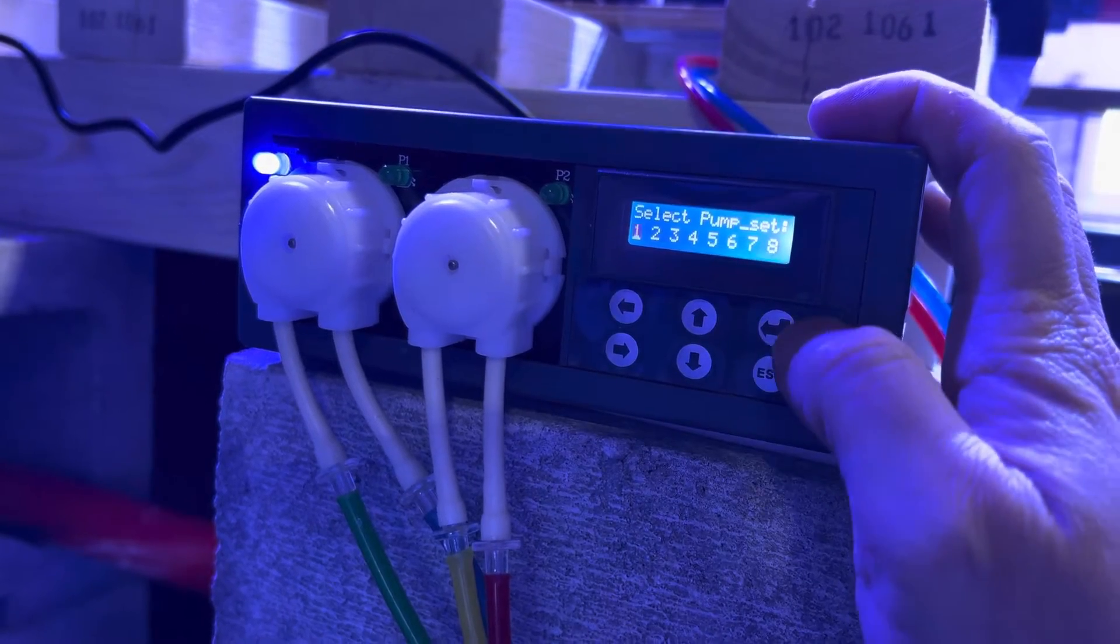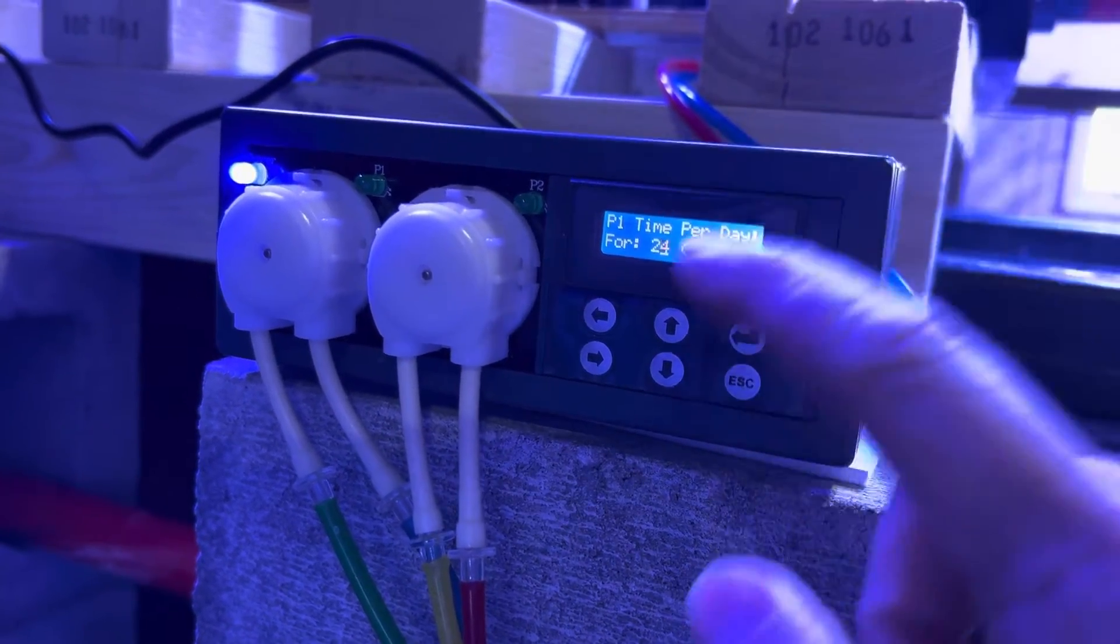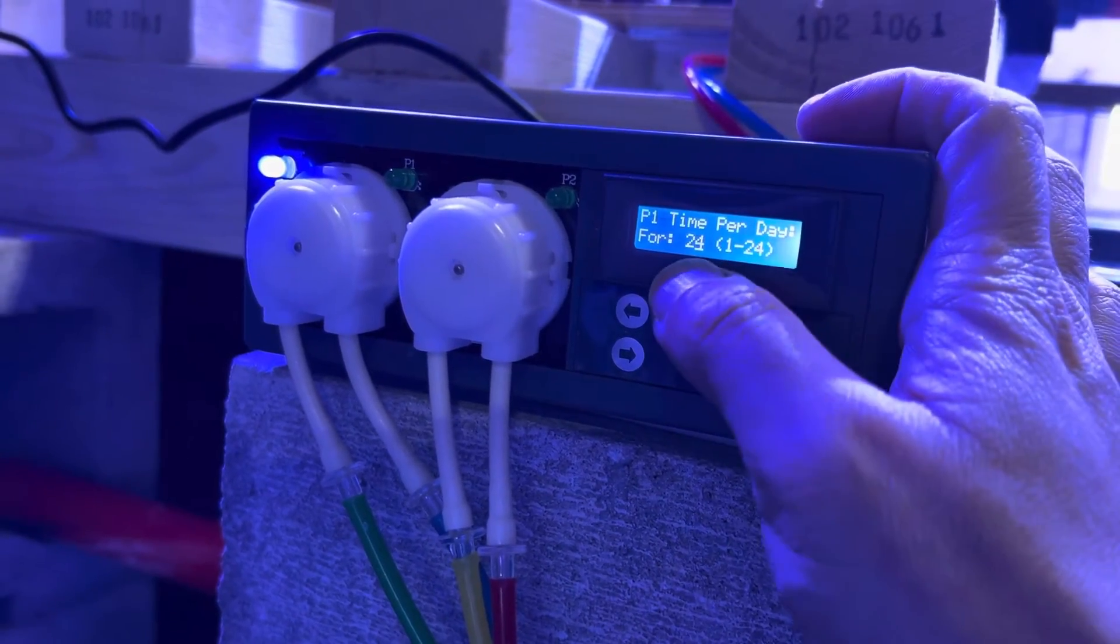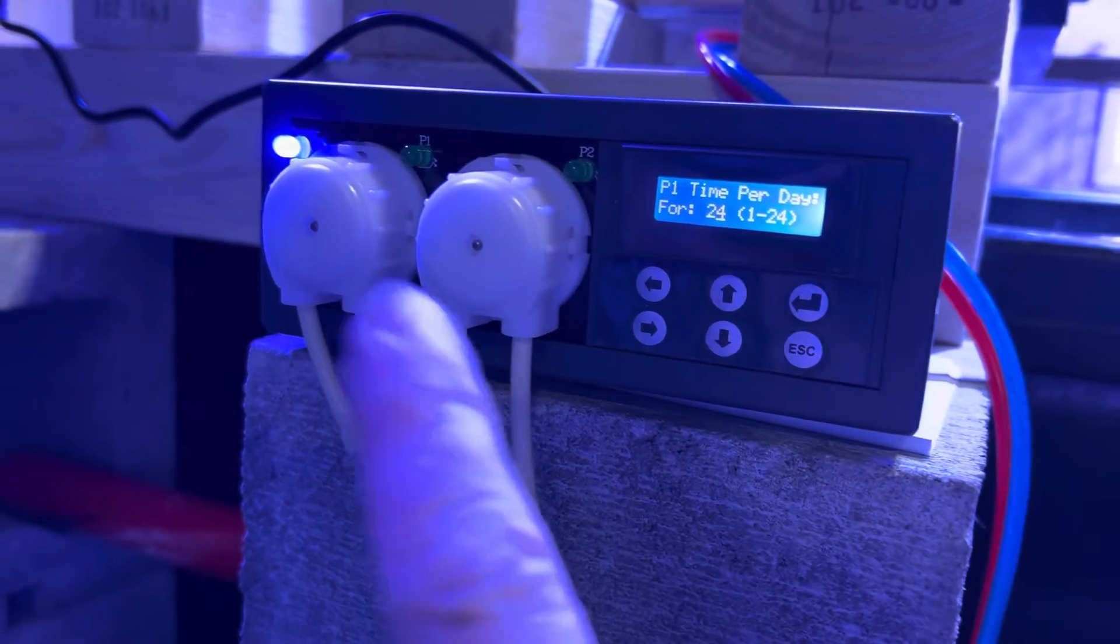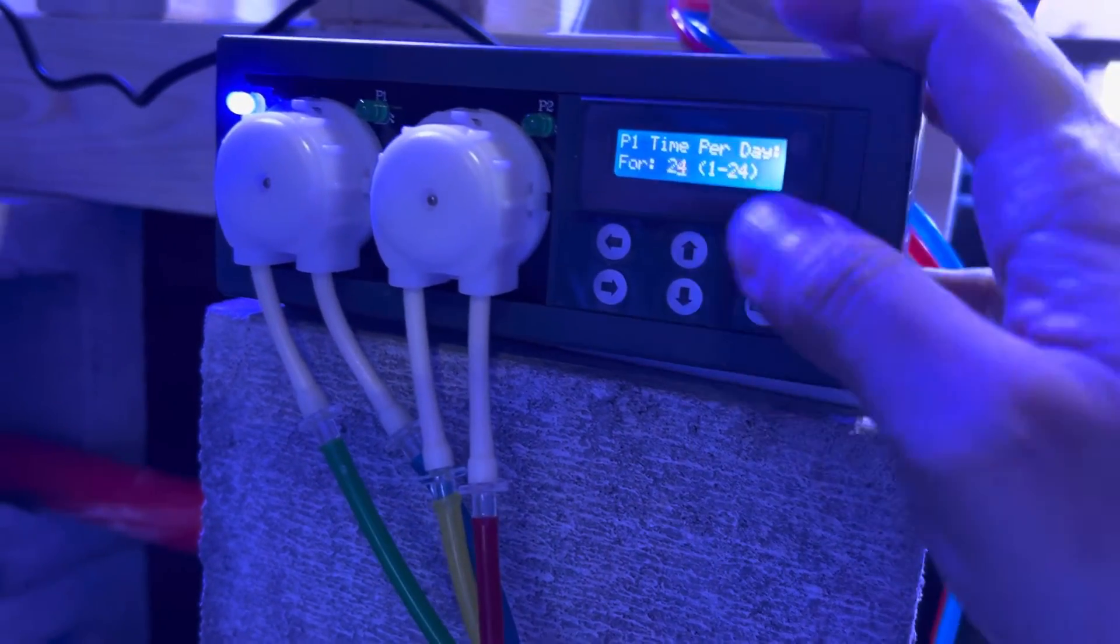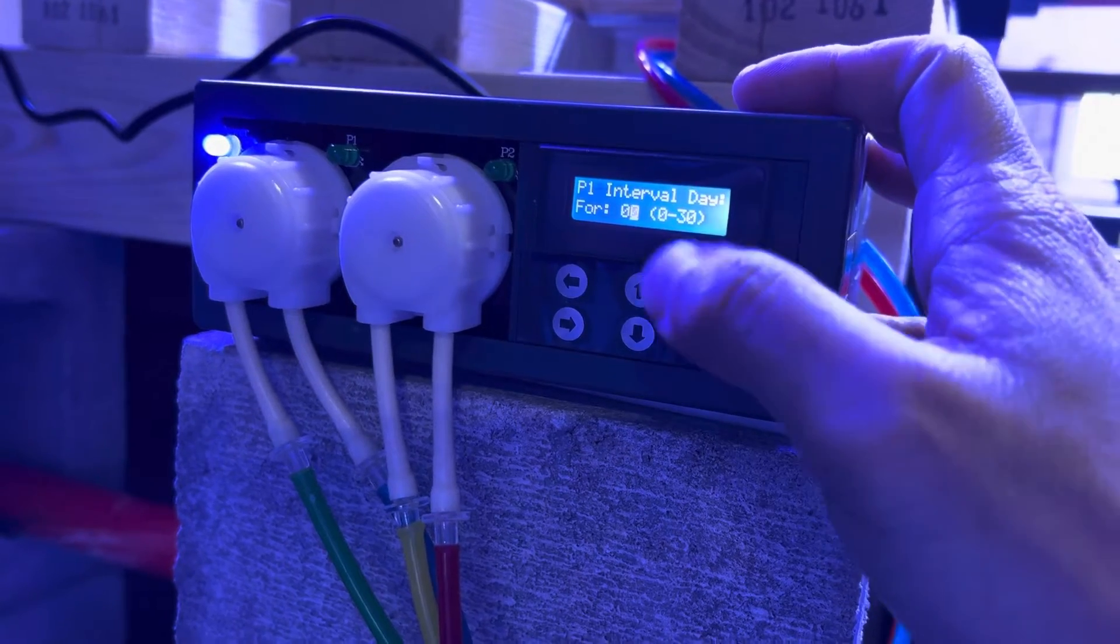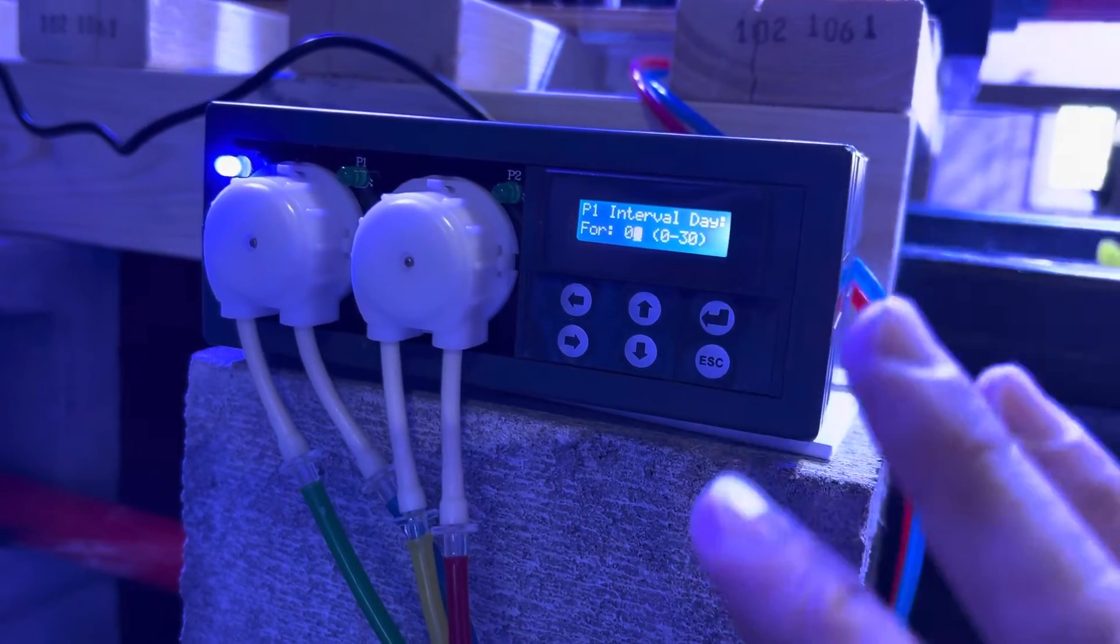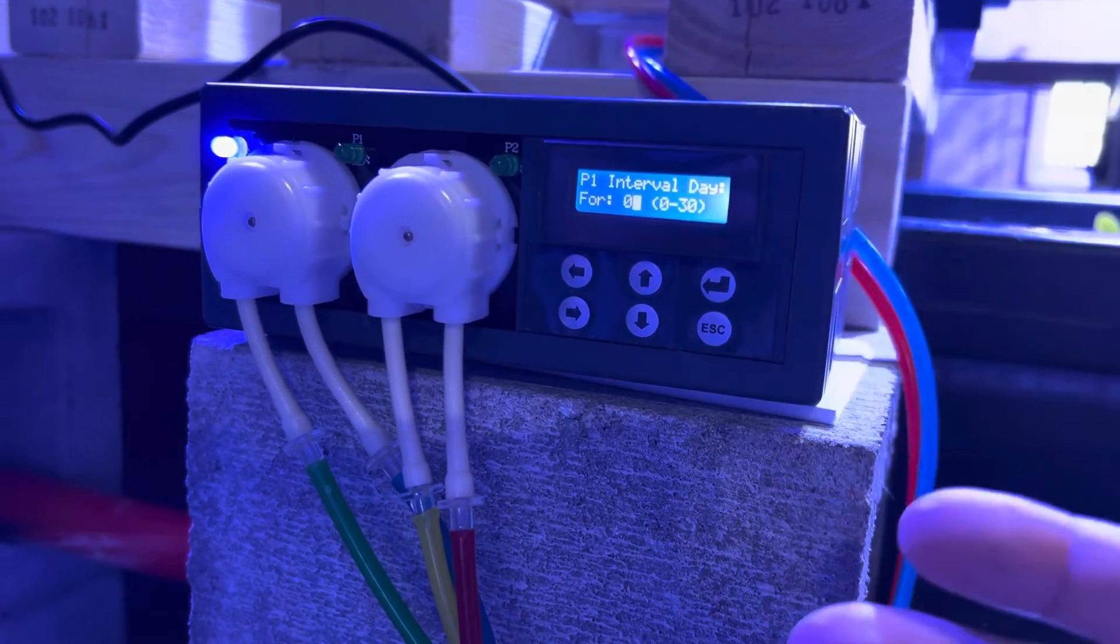Right now, let's say I'm going to select pump number one, then P1 time per day. Right now I set it for 24 times. That means this pump will go off 24 times each day to dose. Press enter, and then the interval days. This means how many days you want to skip.